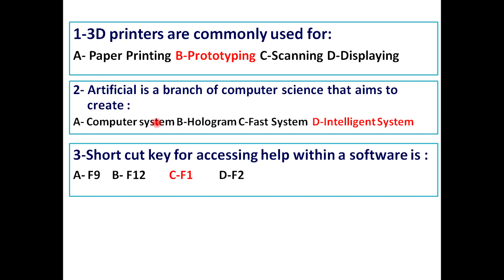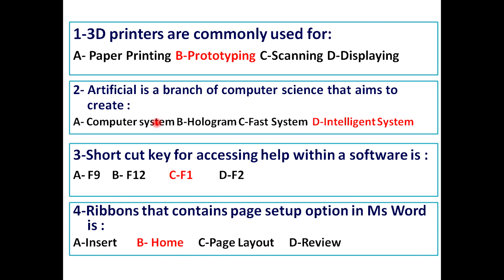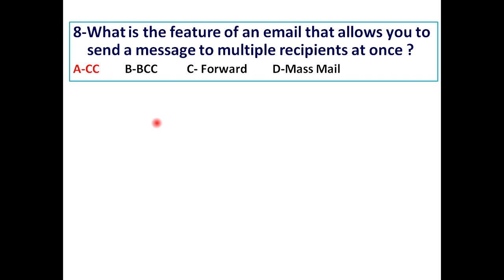Number three: shortcut key for accessing help within a software is F9, F12, F1, and F2. The answer is F1. Number four: ribbons that contain page setup option in MS Word is insert, home, page layout, review. It's home. What is the feature of an email that allows you to send a message to multiple recipients at once? CC, BCC, forward, and mass mail.